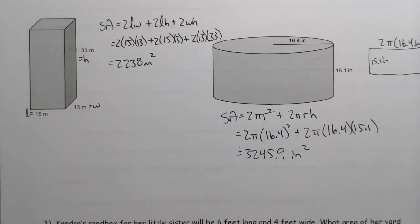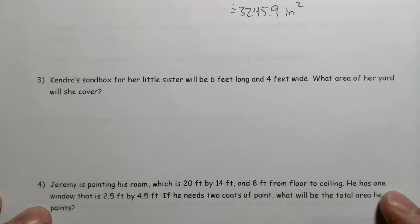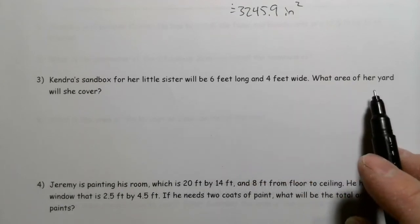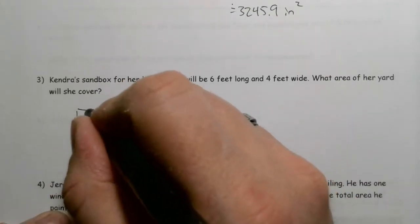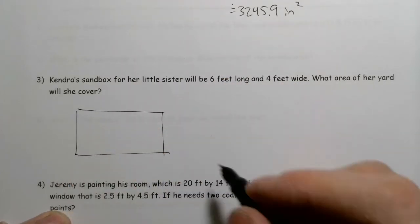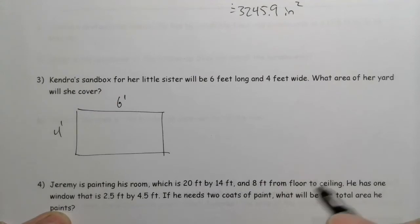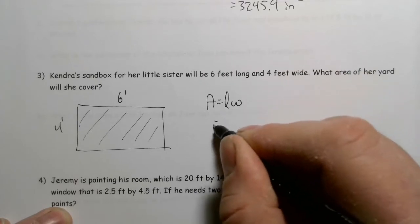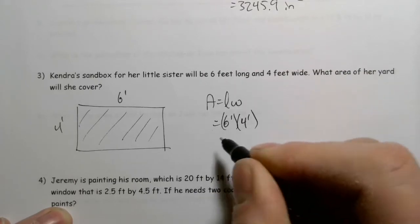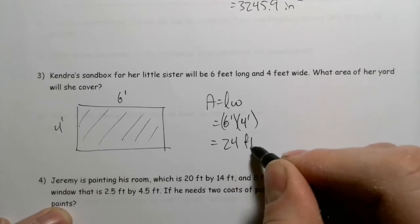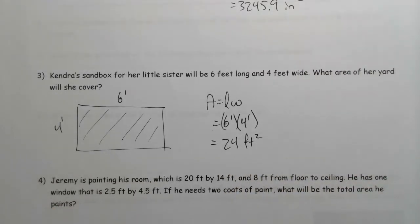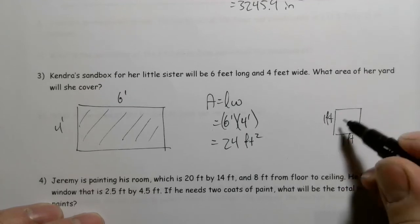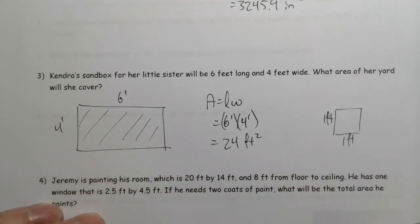Kendra's sandbox for her little sister will be 6 feet long and 4 feet wide. What area of her yard will it cover? Area equals length times width, so 6 feet times 4 feet equals 24 square feet. It'll take 24 one-foot-square units to cover up that sandbox.